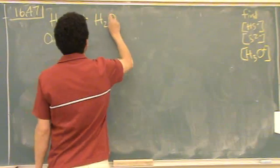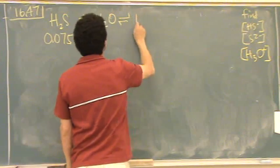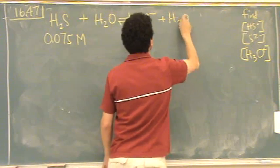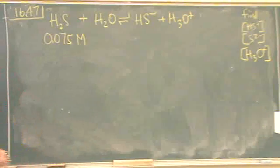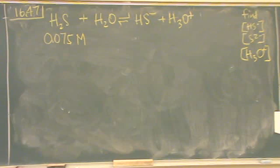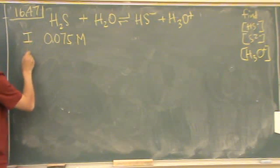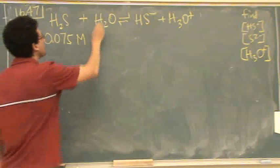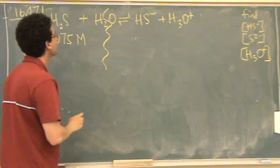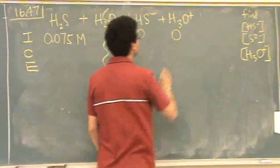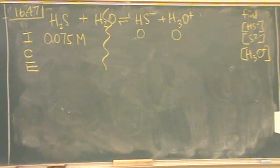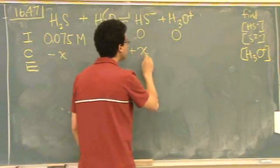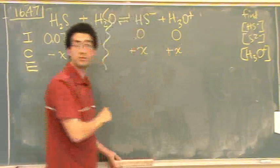H2S plus H2O, you write down your standard equation, goes to HS minus plus H3O plus, just like any other reaction. ICE. Ignore water. You've got zero and zero to start off with. Has to shift to the right. So this is pretty standard, nothing unusual here.